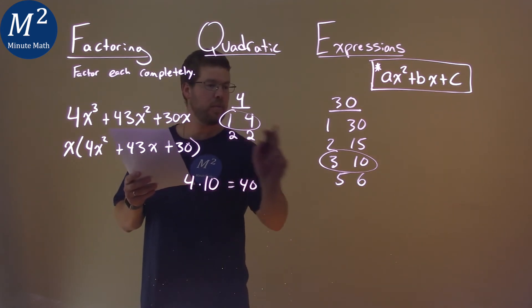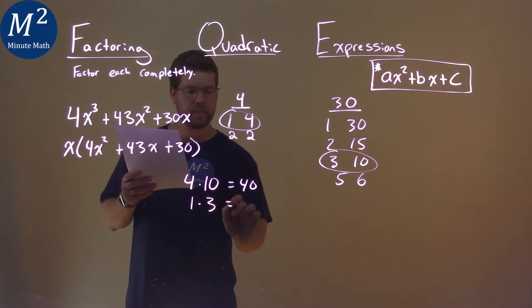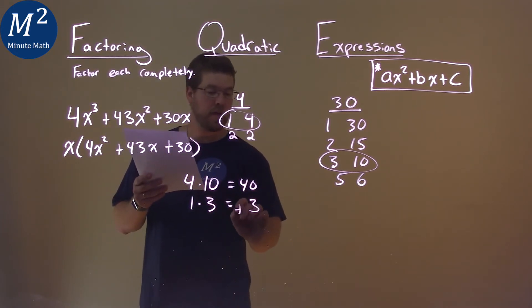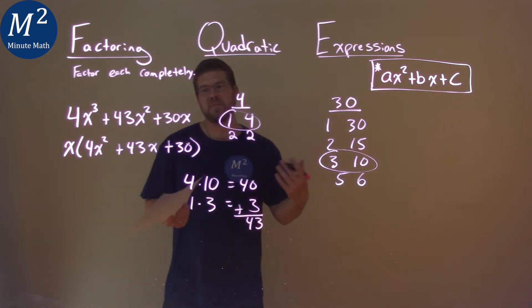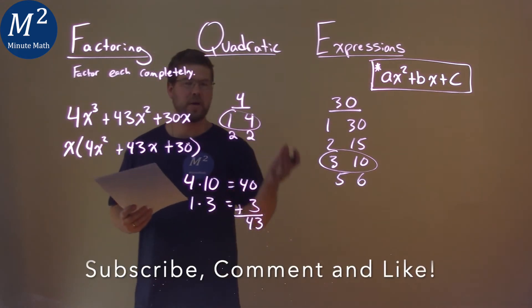Then the other pair would be 1 times a 3, and that's equal to 3. We add them together, and we actually get 43. So right off that first guess, we got it. We got a 43. We got our two pairs here.